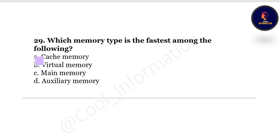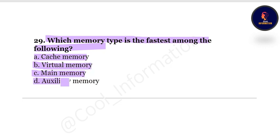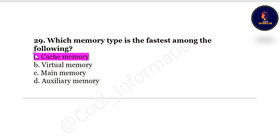Question 29: Which memory type is the fastest among the following? Option A: cache memory, Option B: virtual memory, Option C: main memory, Option D: auxiliary memory. The correct answer is cache memory, which is the fastest.